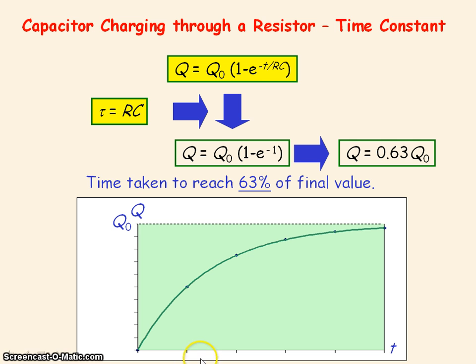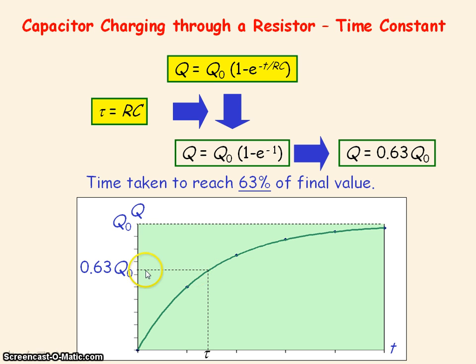We can obtain the time constant from the graph by finding the value of time when the charge stored on the capacitor is equal to 63% of the final value.